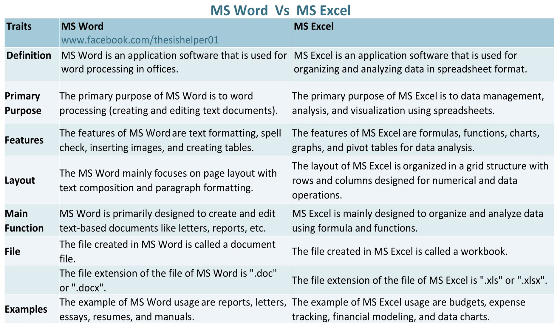The file created in MS Word is called a document file. Whereas, the file created in MS Excel is called a workbook. The file extension of MS Word is .doc or .docx. Whereas, the file extension of MS Excel is .xls or .xlsx.